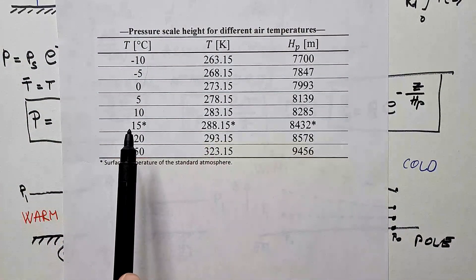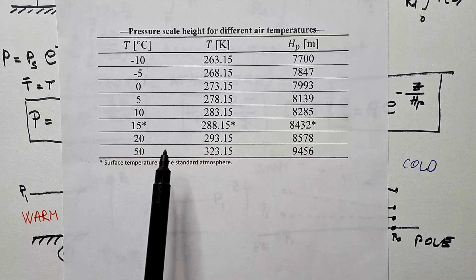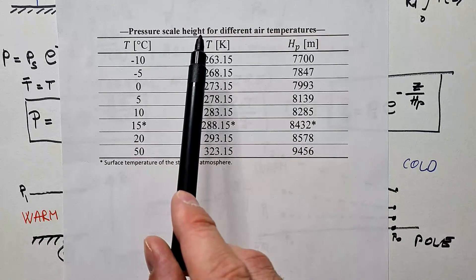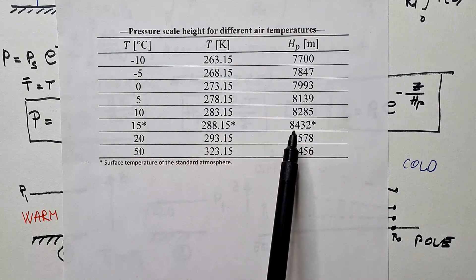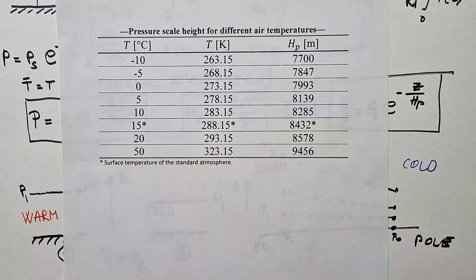And you will remember that 15 degrees Celsius is the surface temperature of the standard atmosphere. So, the pressure scale height in the standard atmosphere is approximately 8.4 kilometers, as you can see here.